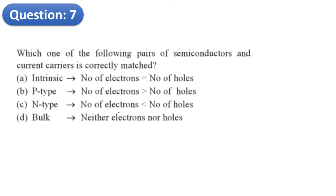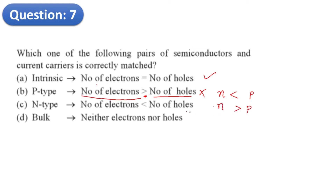Question 7: Which pair of semiconductor and current carriers is correctly matched? For an intrinsic semiconductor, the number of electrons equals the number of holes — this is the correct pair, option A. For p-type semiconductor, the concentration of holes is greater than electrons, so option B (electrons greater than holes) is wrong. For n-type semiconductor, electrons are greater than holes, making option C also wrong. Option D about bulk having neither is also wrong.